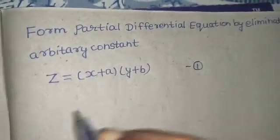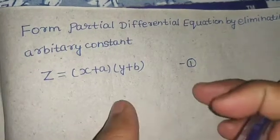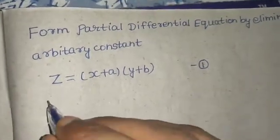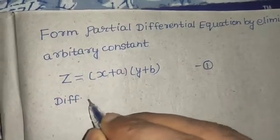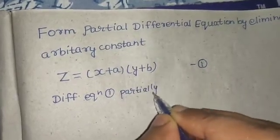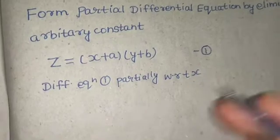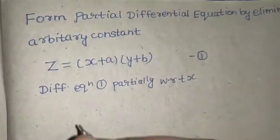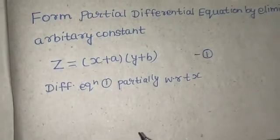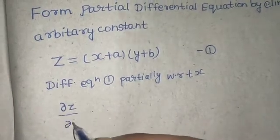What I can do is differentiate equation number one partially, first with respect to x. When differentiating partially with respect to x, y is treated as a constant — that is understood. So this will give del z by del x equals...